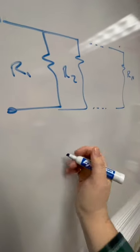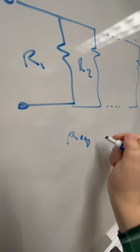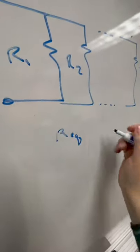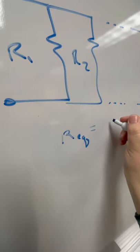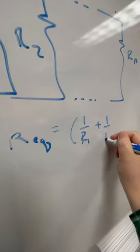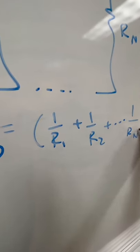If I've got a set of N resistors in parallel, then the equivalent resistance, which is the resistor I would put in between these terminals to replace all these resistors, is equal to 1 over R1 plus 1 over R2 plus all the way down to 1 over Rn inverse.